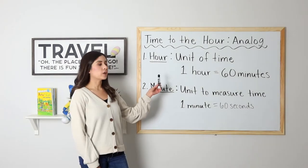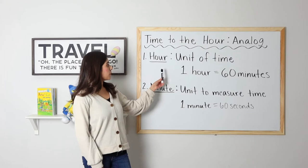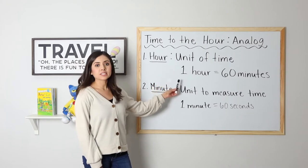Number one, we have hour. An hour is a unit of time. One hour equals 60 minutes.